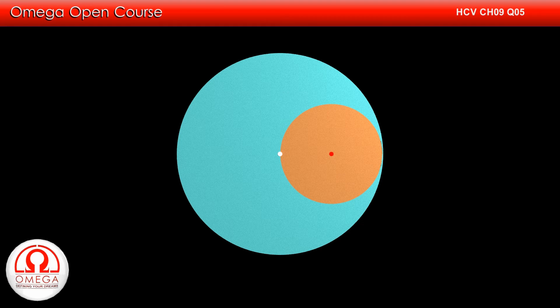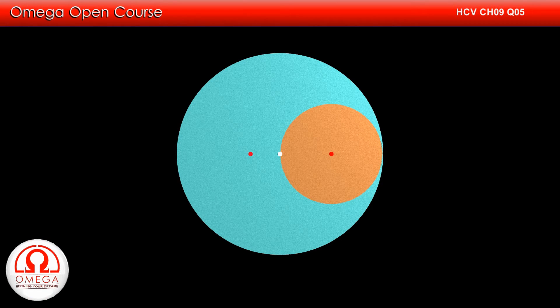Since the residual disk is symmetric about the horizontal diameter, its center of mass must lie on the horizontal line passing through center of the larger disk.